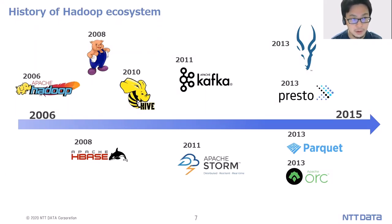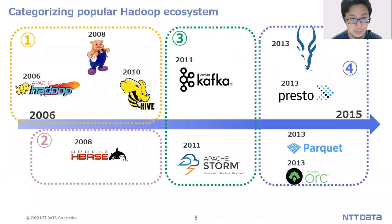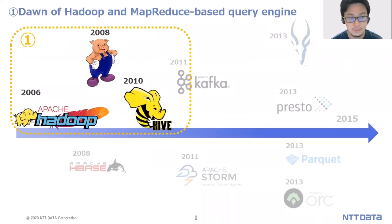I will first talk about the history of open-source software for processing and utilizing big data. This is a brief summary of the history of the Hadoop ecosystem. As you can see, there are many kinds of ecosystems around Apache Hadoop. We can categorize the popular Hadoop ecosystems, and I will briefly introduce each category in this session.